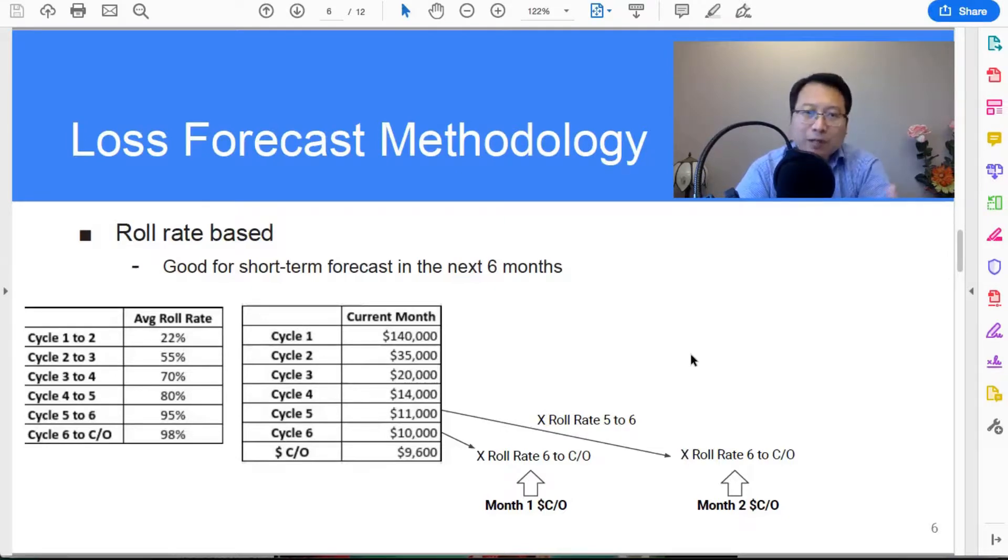So you can do this for other cycles. This way you can easily get the forecast for charge off in the next six months. This also has a high degree of reliability. Okay, so roll rate based is good for the short term forecast in the next six months.